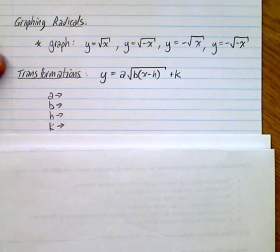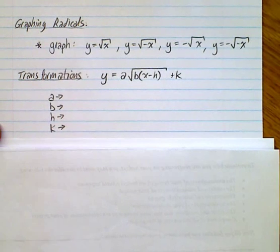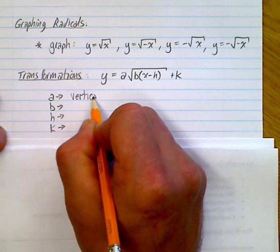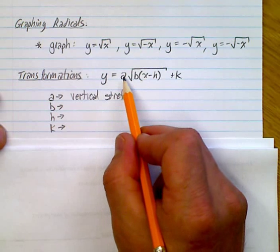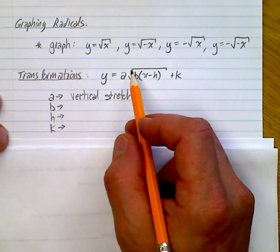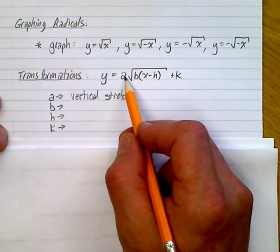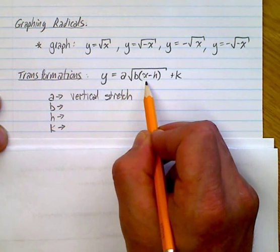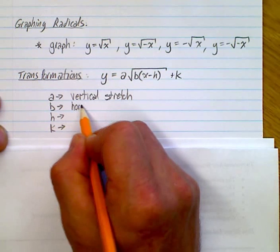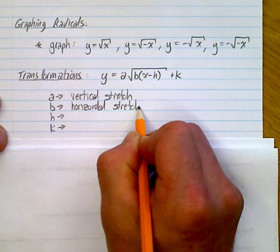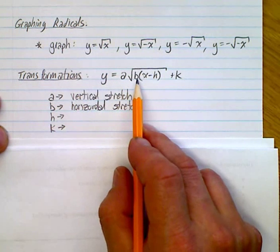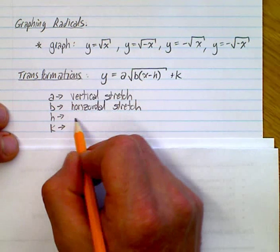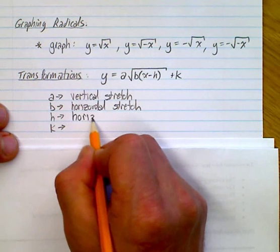Now let's look at transformations. What do these four parameters — a, b, h, k — mean? They work exactly the same way as before. The 'a' is your vertical stretch: if a > 1 it's a vertical expansion, if a < 1 it's a vertical compression. The 'b' on the inside — you have to isolate or factor it so you just have 1x inside — is your horizontal stretch, affecting the x-axis.